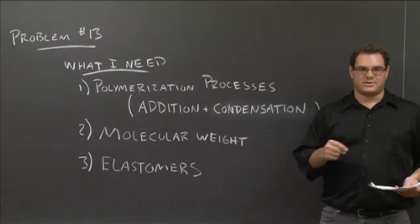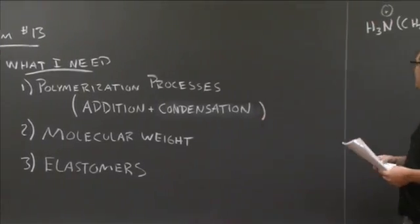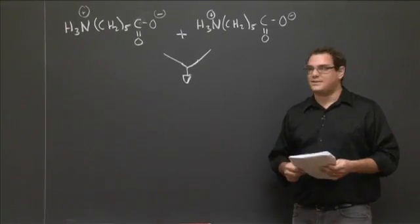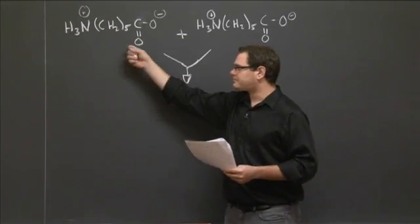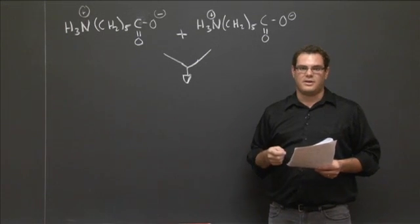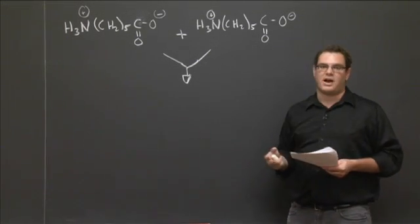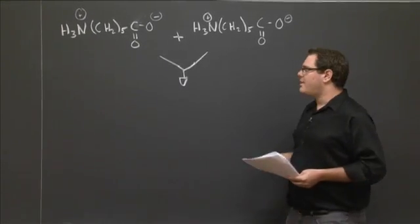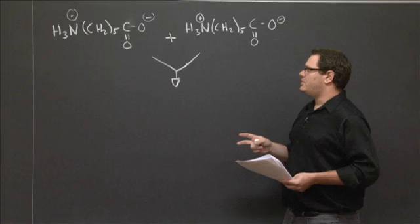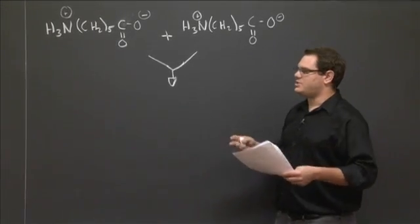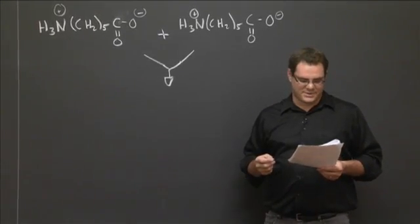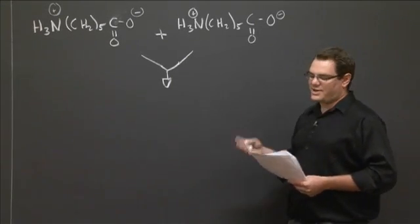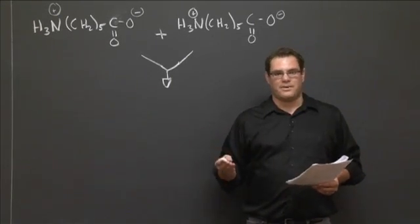So we're going to go and we're going to start the problem now. We're giving in the problem the 6-amino hexanoic acid, which I've drawn here. And we're also giving in the problem the structure of nylon 6. And this is the actual reaction that's used to create nylon. So what I'm going to do is I'm going to start, I'm going to show you, ask the question of how do we create nylon from 6-amino hexanoic acid.